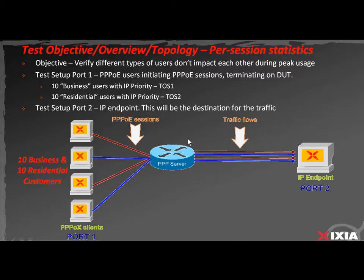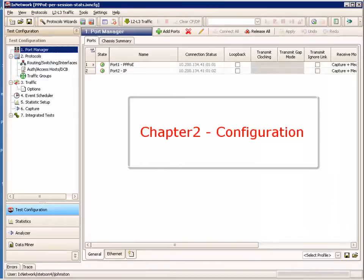We will verify whether there is impact on the existing business customers and the existing residential customers. This test will show the capability of the ixNetwork per session statistics to show the aggregated view at a per ToS level, the aggregated view at a per business or residential level, or drilling down into the per session statistics for both all 10 business and all 10 residential customers on the control plane side as well as the data plane side.